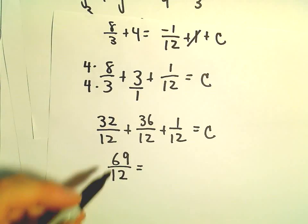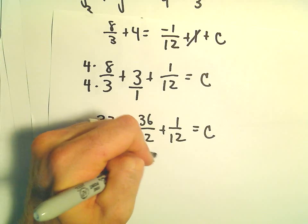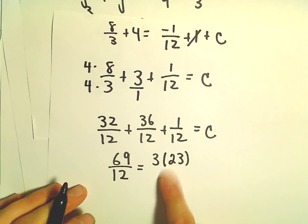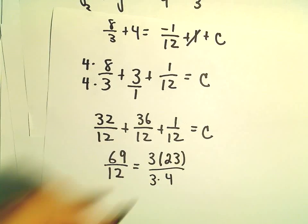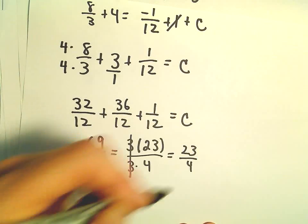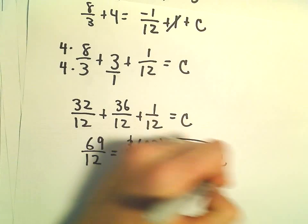We can always reduce this. Let's see. We can write this as 3 times 23. That's going to give us 69. And then 3 times 4, so we can cancel out the 3s. So, 23/4 will be our c value.